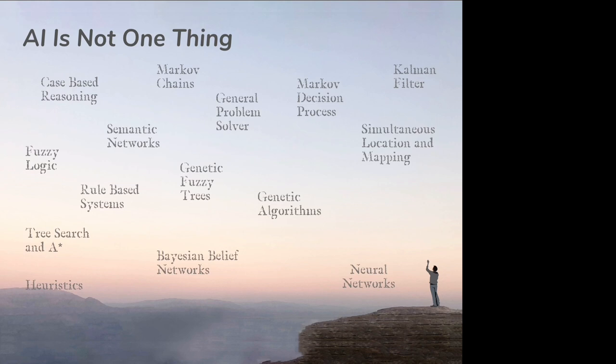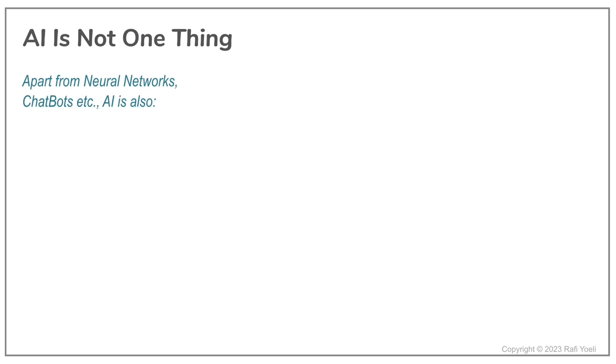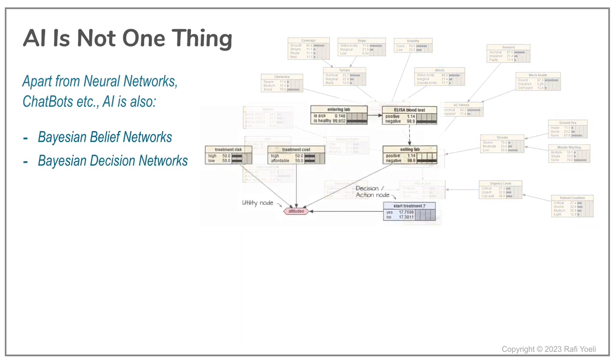Unlike the black box nature of neural networks, these lesser-known AI technologies offer transparency and trust. Bayesian belief and decision networks, with their interconnected nodes and probabilities, make their reasoning visible. We can see how they arrive at conclusions, strengthening our trust in their decisions.